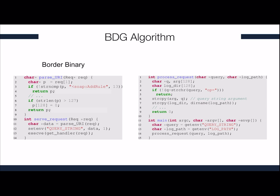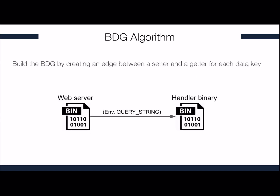Let's see how the BDG algorithm works with an example. When Caronte analyzes the function serve_request, it follows the data flow and inspects the function parseURI. Here, some data is compared against network-related keywords, and therefore Caronte taints the variable P. The taint is carried outside the function, so the variable data at line 11 will be tainted. The argument of the setenv call at line 12 will contain tainted data, and the environment CPF will understand that some data is shared across the environment. The environment CPF also extracts the data key query_string and identifies this border binary as a setter binary. Then we use the query_string data key to find other binaries that rely on the same data key and schedule them for further analysis, then build the BDG by creating an edge between the setter and the getter for each data key.